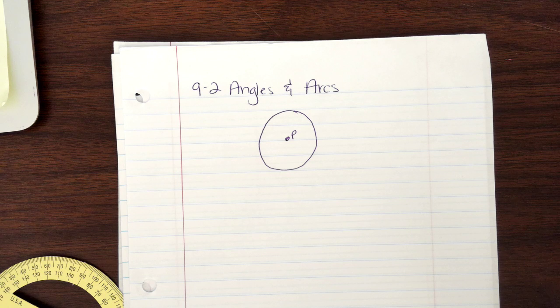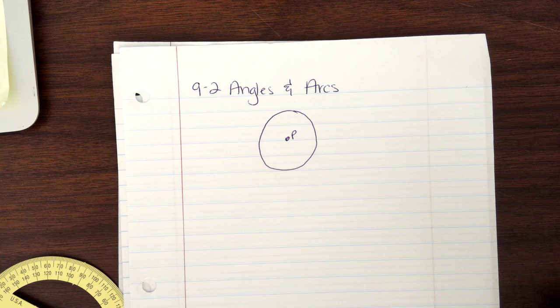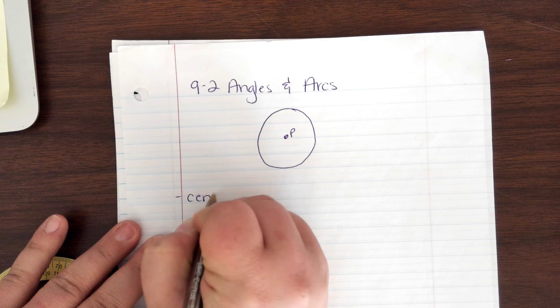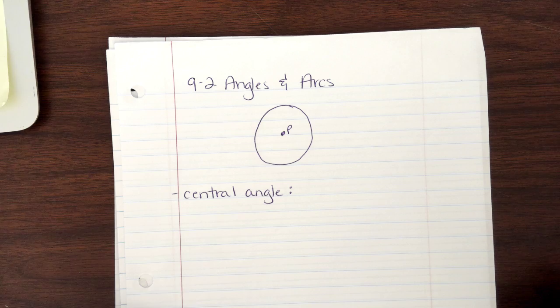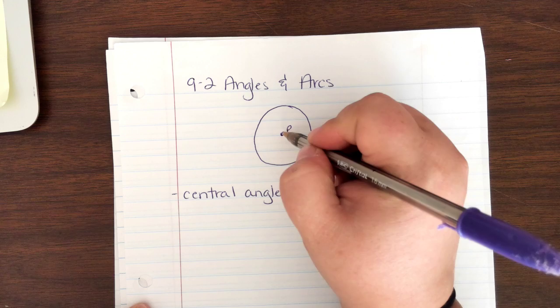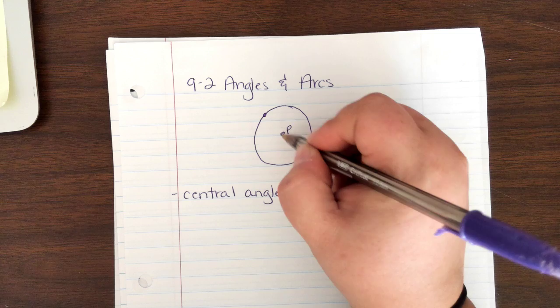Okay, so first thing, first thing that we are going to talk about for our angles and arcs today is the, you ready? First thing we're going to talk about today is our central angle. Write it down, please. Central, like the high school, central angle. If you're going there, yay, congrats. Central angle. Now here's the deal. What I want you to do with your circle right now, you have the point P in the middle. I want you to find two other points on your circle.